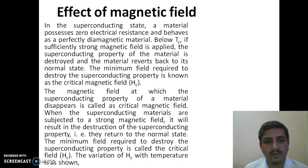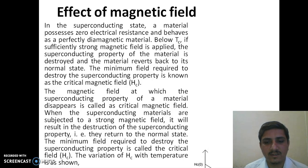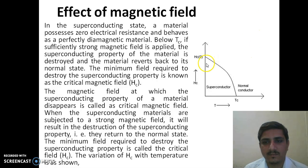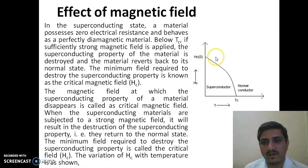When superconducting materials are subjected to a strong magnetic field, it results in the destruction of the superconducting property — they return to normal state. The minimum field required to destroy the superconducting property is called the critical field, labeled as Hc. The variation of Hc with temperature is shown in this graph, where in the region below Hc and below the critical temperature, the material remains in the superconducting state. Above the critical temperature or above the critical field, the material returns to normal state.